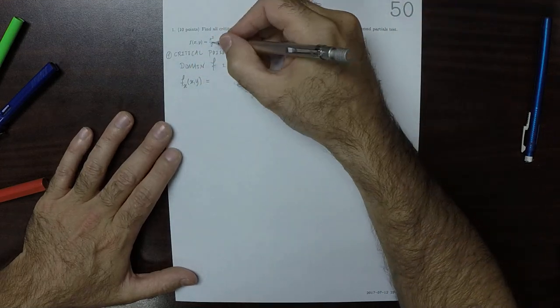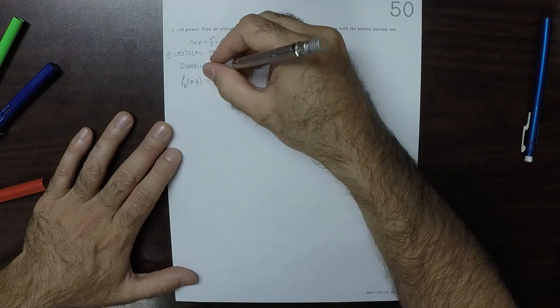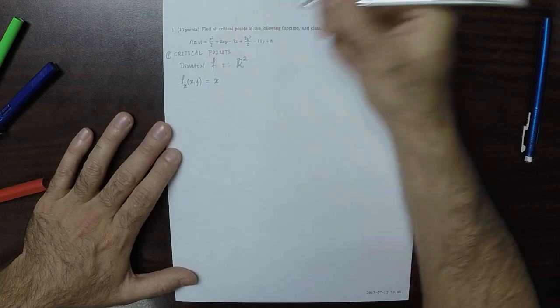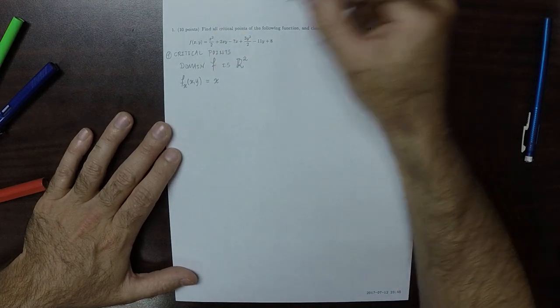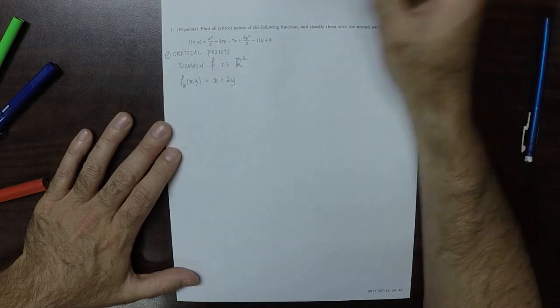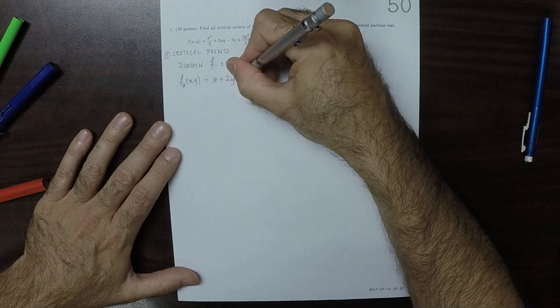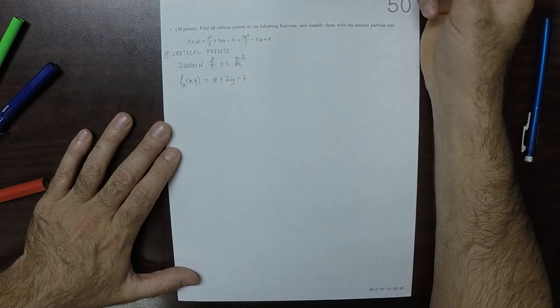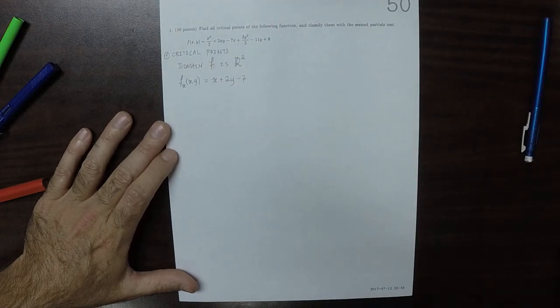The x partial is: the derivative of x squared over 2 is x, the derivative of 2xy is 2y, the derivative of negative 7x is negative 7, and then all zeros.